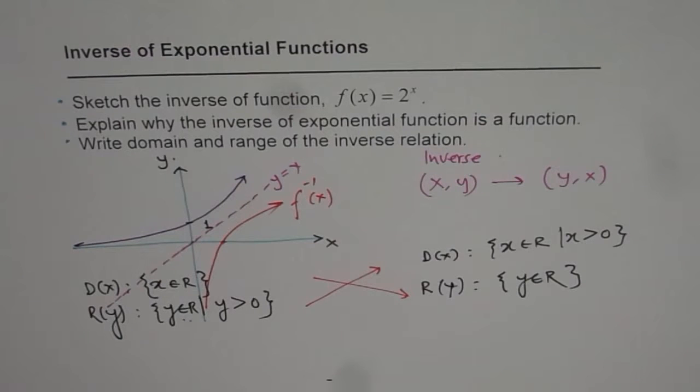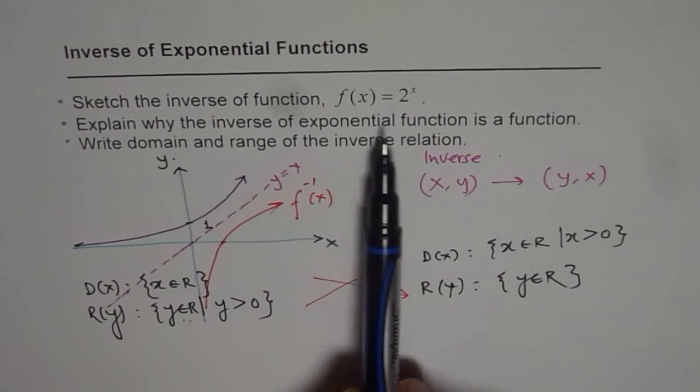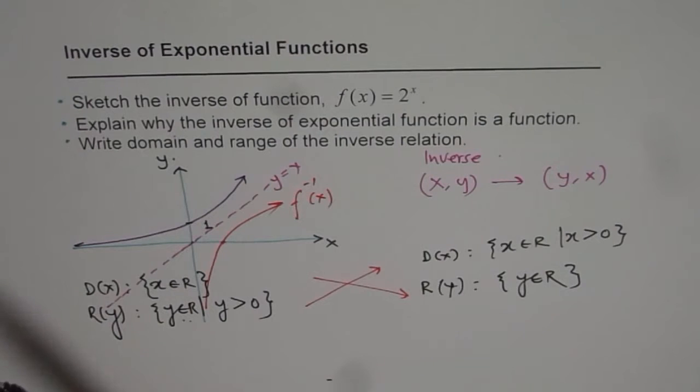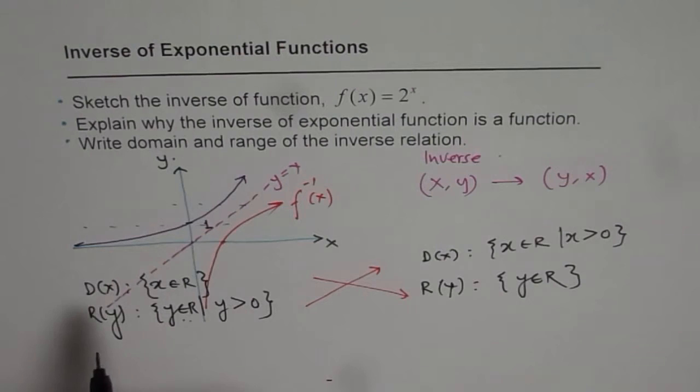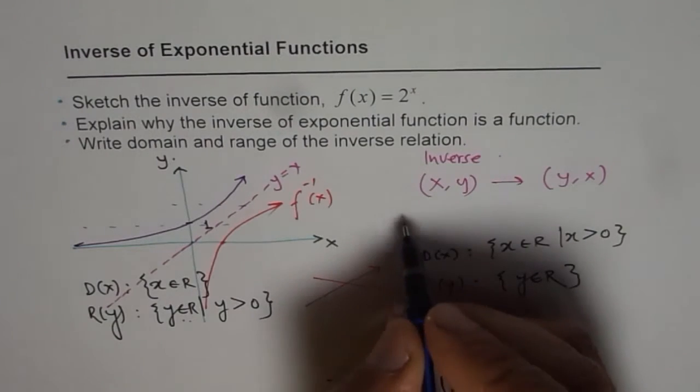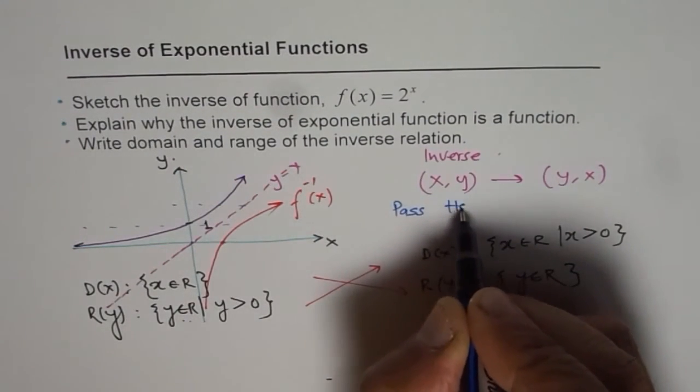One important part here is whether the inverse will be a function or not. In this case, explain why the inverse of exponential function is a function. If I draw a horizontal line, it will only intersect at one point, and therefore the inverse will be a function. The reason is it will pass the horizontal line test.